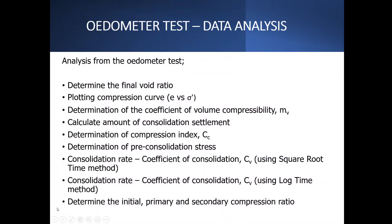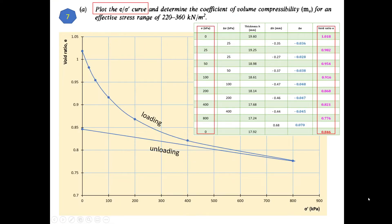In the previous video, we already determined the final void ratio and plotted the curve of void ratio e versus effective stress. Now we need to determine the coefficients of permeability and also calculate the consolidation settlement. This is the plot we already completed in the previous video.